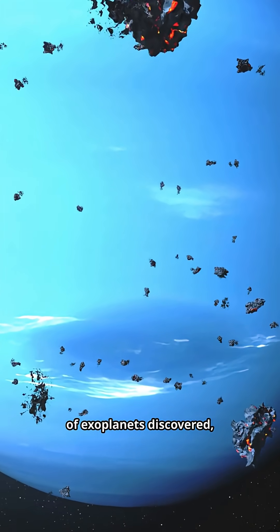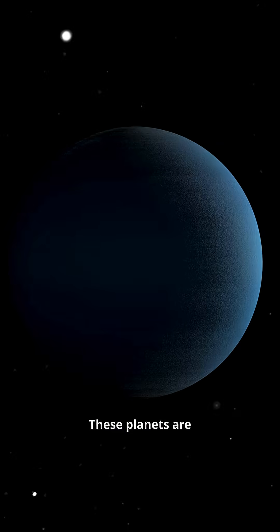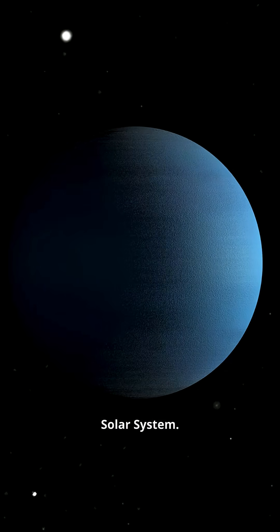Among the thousands of exoplanets discovered, one type is surprisingly common: mini-Neptunes. These planets are larger than Earth but smaller than Neptune, a size that does not exist in our own solar system.